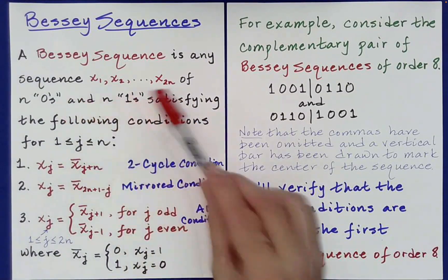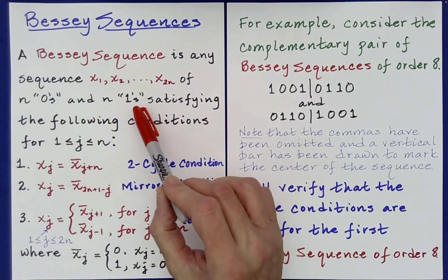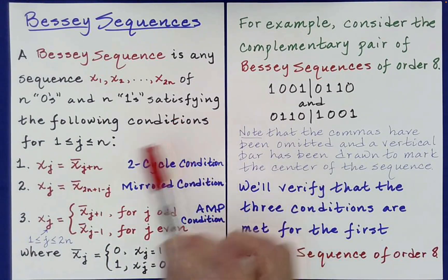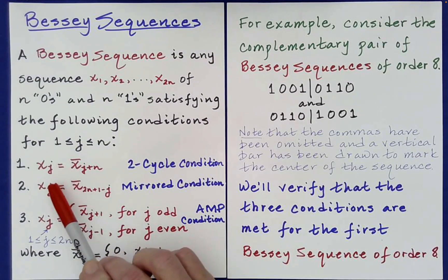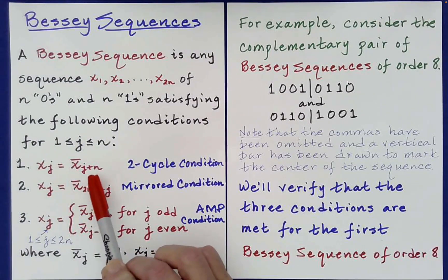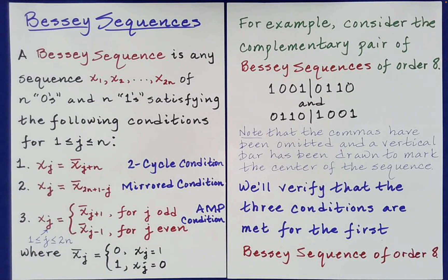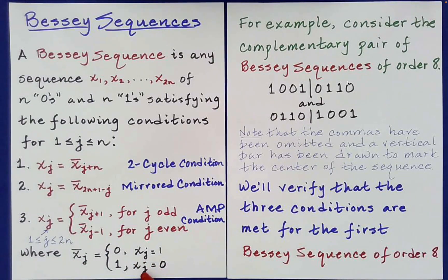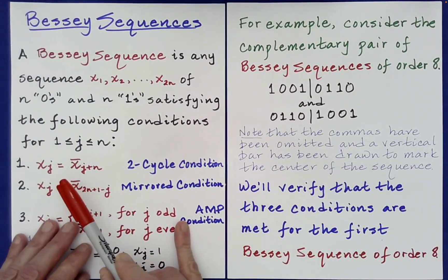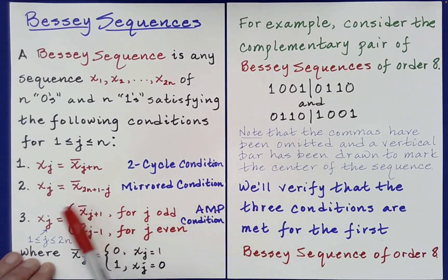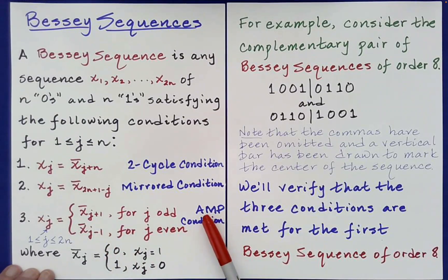A Bessie sequence is any sequence of n zeros and n ones satisfying the following three conditions. Condition one: x sub j needs to be equal to the complement of x sub j plus n. The complement means the opposite digit value — if x sub j is 1, then x sub j bar equals 0, and if x sub j is 0, then x sub j bar is 1. This is called the two-cycle condition. The mirrored condition and the AMP condition are the second and third conditions respectively.